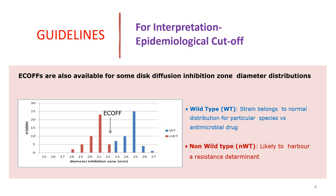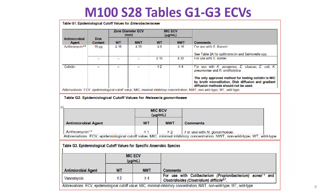Similarly, for disc diffusion, the clear zones of inhibition: if the zone diameter is more than the ECOFF, it is wild type; if less than the ECOFF, it is interpreted as non-wild type. So wild type versus non-wild type only tells us whether a resistance mechanism is present or absent — wild type has no resistance mechanism, non-wild type has one.